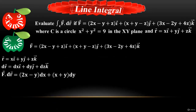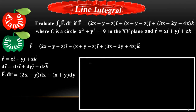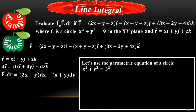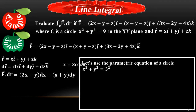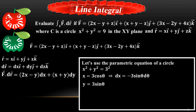The next step is to use the parametric equation for the circle x² + y² = 9 = 3². The parametric equations give x = 3cosθ, so dx = −3sinθ dθ. Also, y = 3sinθ, so dy = 3cosθ dθ. Theta varies from 0 to 2π.